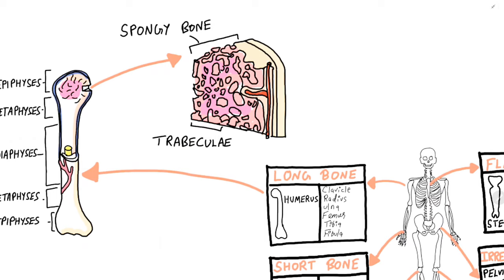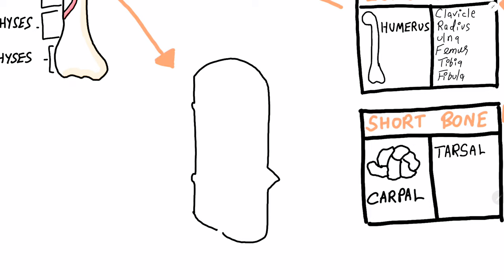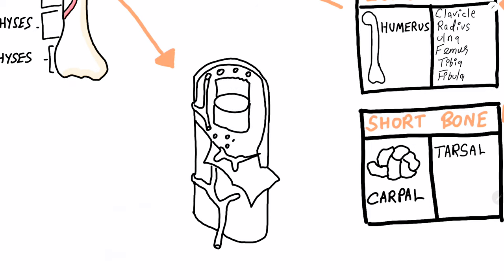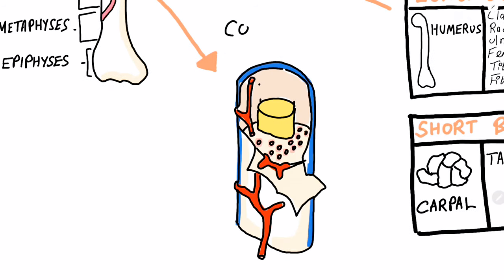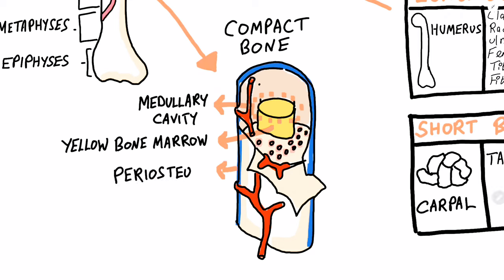Let us observe the cross-section of a long bone in detail. A long bone has a hollow cavity known as the medullary cavity that contains yellow bone marrow. The bone is covered by the strongest organic layer, known as the periosteum. The bone is supplied with oxygen and nutrients through the nutrient artery. Beneath the periosteum, you have the compact bone.